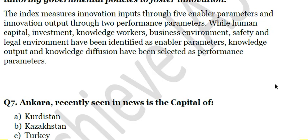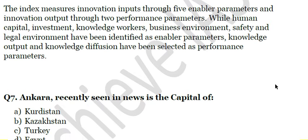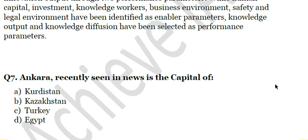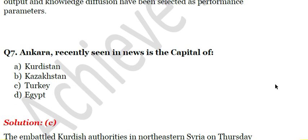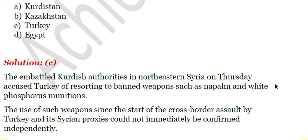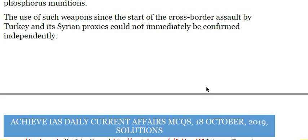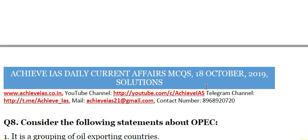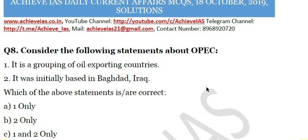Next question: Ankara, recently seen in news, is the capital of — A) Kurdistan, B) Kazakhstan, C) Turkey, D) Egypt. The answer is C — Turkey. Recently, Turkey launched an assault on Kurdish fighters in northeastern Syria, and it has been alleged by the Kurds that Ankara used banned weapons, including white phosphorus munitions.